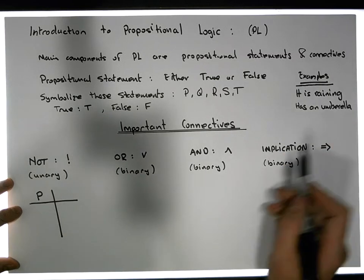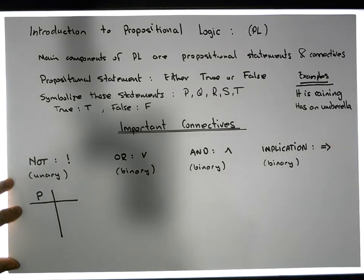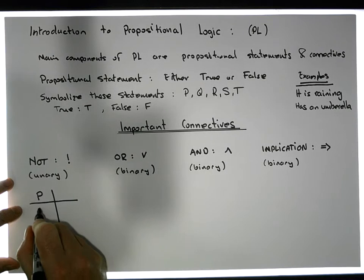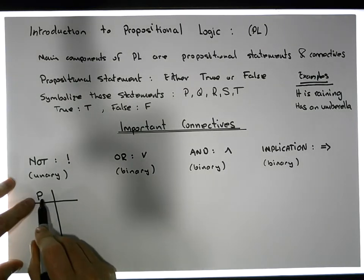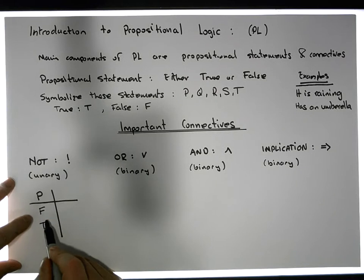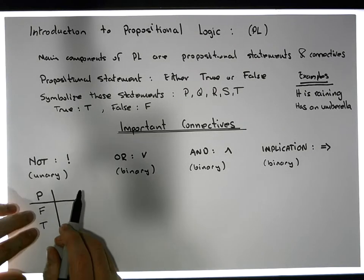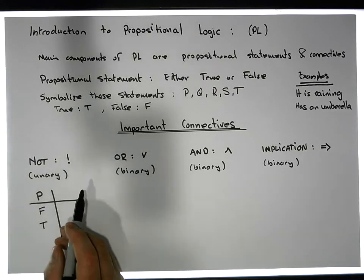It could be it is raining, I have an umbrella, it could be anything at all, but it has to be a proposition. Some proposition P can either be false or it can be true. They're the possible states that the proposition P could be in at any moment in time. It can't be both, it can only be one, that's part of the definition of a proposition.